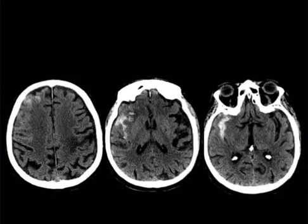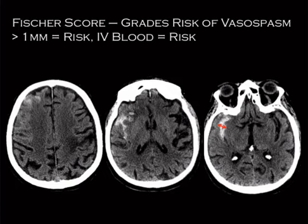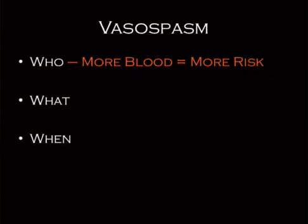The easy way to remember vasospasm risk is: more blood equals more risk. There's the Fisher score, developed in the early 1980s to grade risk — scale of 1 to 4. When you get above 1 mm in maximum thickness of blood, you're at increased risk. Intraventricular hemorrhage is even higher risk, grade 4. So more blood, more risk.